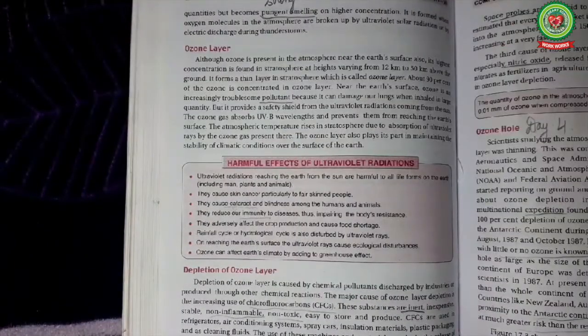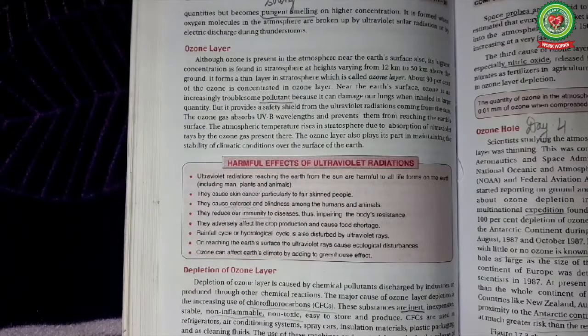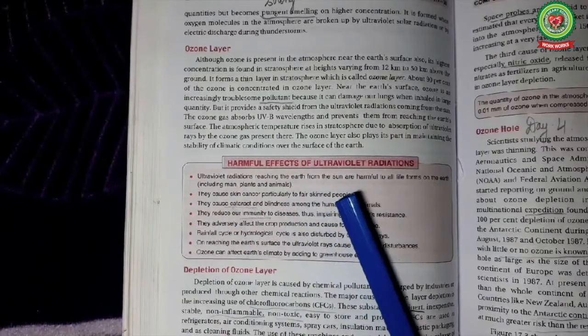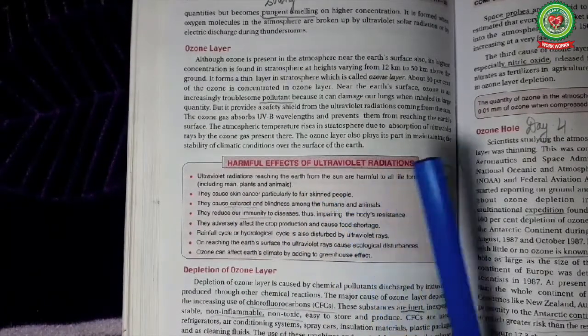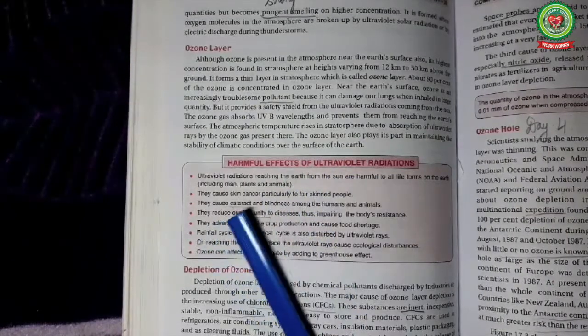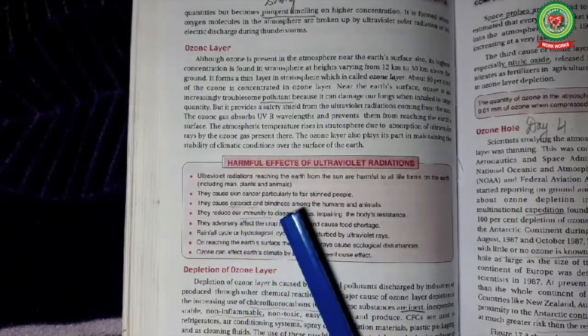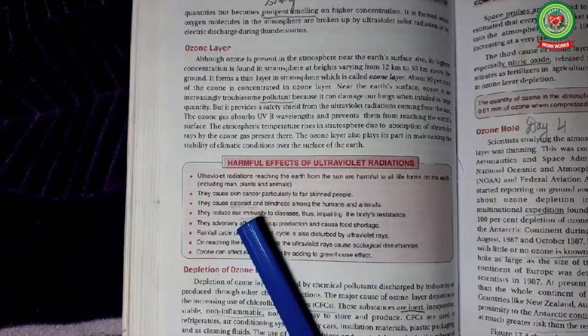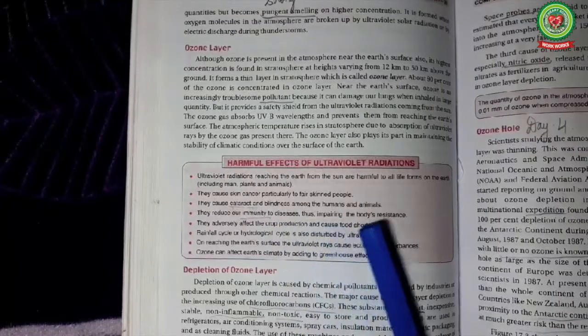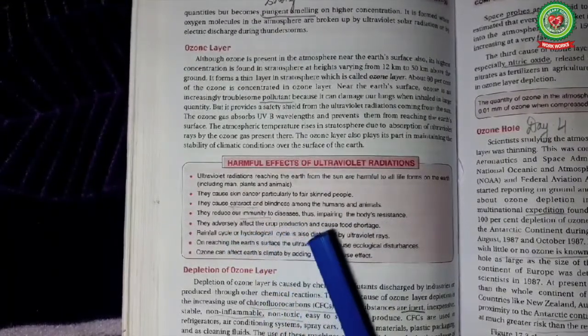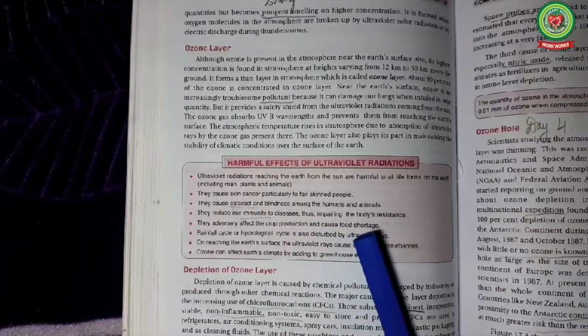Let us read the harmful effects of ultraviolet radiations from page 248. Ultraviolet radiations reaching the earth from the sun are harmful to all kinds of plants, animals and even human beings. They cause skin cancer particularly to the fair skinned people. They cause cataract and blindness among the humans and animals. They reduce our immunity system thus impairing the body's resistance.